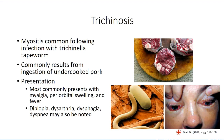Trichinosis is an example of a parasitic myositis. It is the result of infection with the Trichinella tapeworm and is most commonly associated with the consumption of undercooked meat products, with pork being the most common source. Most patients will present with muscle pain, swelling around the eyes due to vasculitis, and fever. Additional symptoms may include double vision due to paraorbital swelling, slurred speech, and difficulty swallowing due to involvement of the muscles of phonation, as well as shortness of breath.